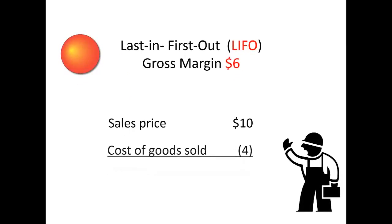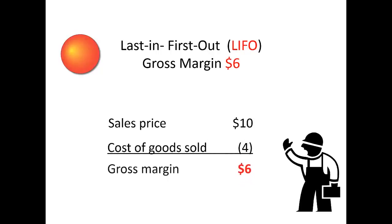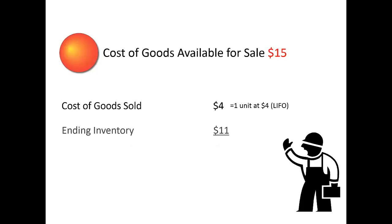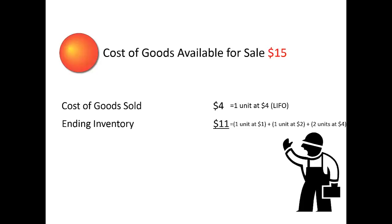Sales price of $10 less cost of goods sold of $4 equals gross margin of $6. The original cost of goods available for sale of $15 reconciles as follows: cost of goods sold of $4 (one unit at $4), plus ending inventory of $11 (one unit at $1, one unit at $2, and two units at $4), equals total cost of goods available for sale of $15. All goods either get expensed as cost of goods sold ($4) or remain in ending inventory ($11).